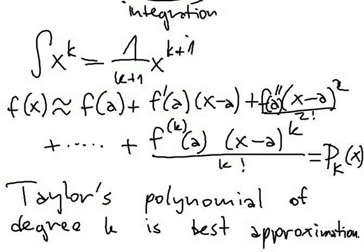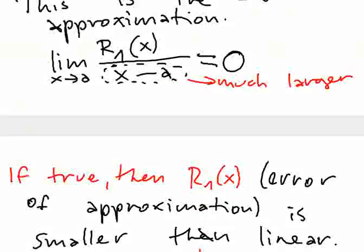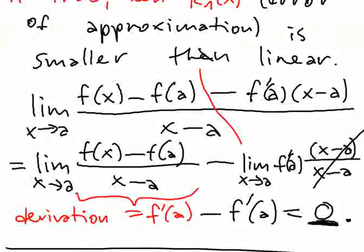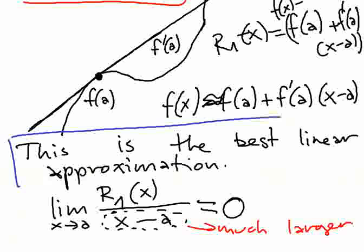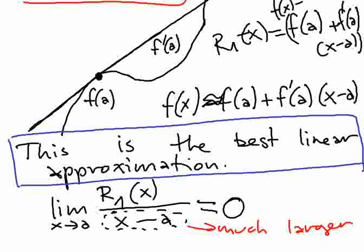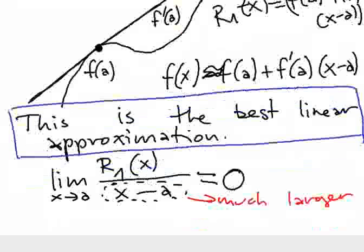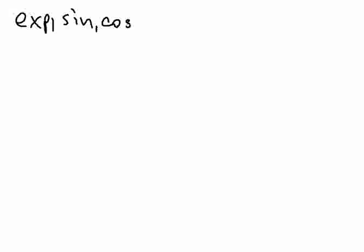This is a generalization of the statement about the best linear approximation — where R1 being small was the best linear approximation. So this is the statement we would like to show. Let me describe the whole thing in a slightly different setting. Suppose you have a function you don't know much about — functions like the exponential, sine, or cosine. Maybe you know how the function is defined but you don't have an idea how to calculate some values. For example, I would like to calculate the exponential of one — even the famous value e.